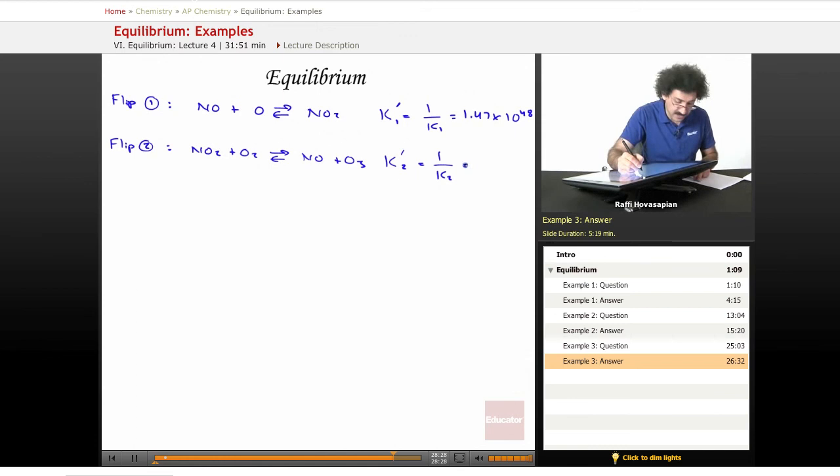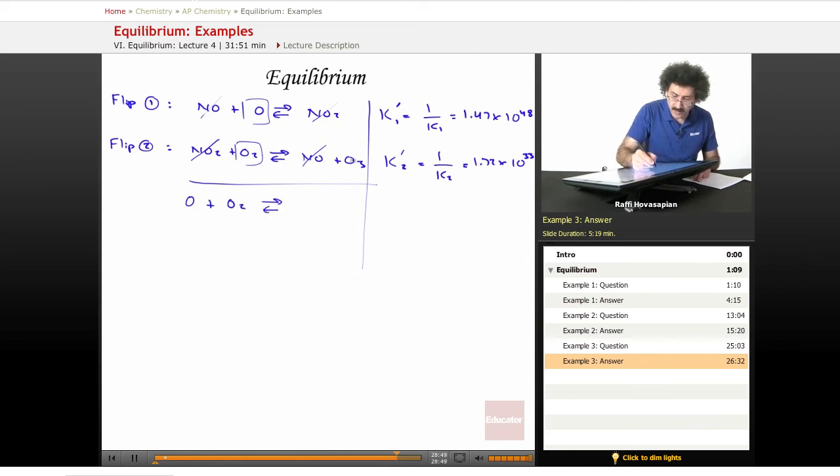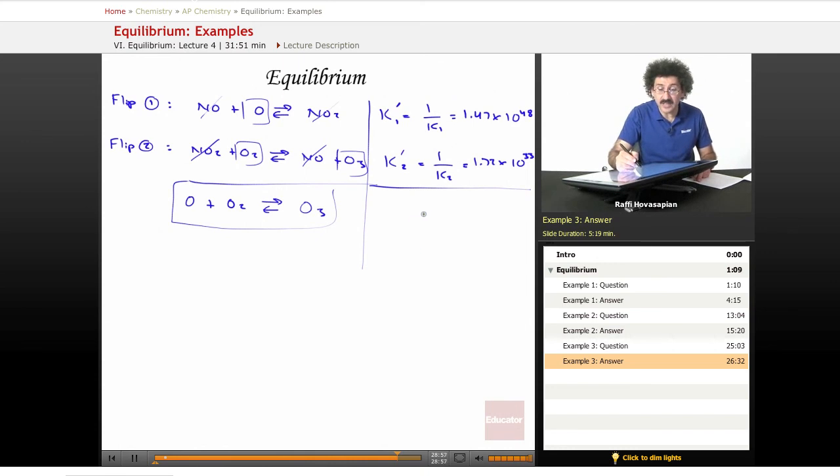Well, this equilibrium constant, again I flipped it, so I take the reciprocal of that and I get 1.72 times 10 to the 33rd. Now I add these two equations: NO2 cancels NO2, NO cancels NO, I'm left with O plus O2 goes to O3. This was the equation that we wanted.